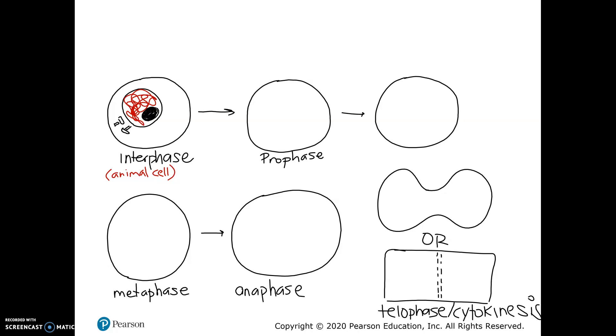So when you see these cells and they always draw four chromosomes, it's not because every cell has four. They're using four because by drawing four, it's enough chromosomes that you can see what's going on. But it's not so many that it's really crowded and difficult to follow what's going on.